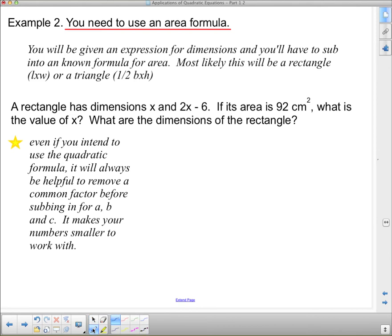Let's have a look at how we set this up. So, we're going to start by saying, okay, this is a rectangle, so I know area is length times width. And I've been given all of this information. It says it has dimensions x and 2x minus 6. And then our area is 92. So, now we need to expand, simplify, and get one side equal to 0. So, I got 92 there. This is going to be 2x squared minus 6x. That was from the distributive law.